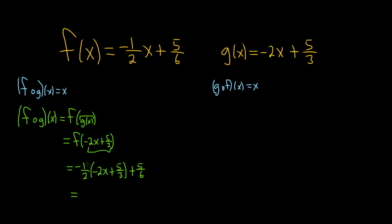Let's distribute this negative 1 half. Negative 1 half times negative 2x - the 2's will cancel, and the negatives will become a positive and we just get x. Negative 1 half times 5 thirds, you just get negative 5 sixths. And then we have our plus 5 sixths, and then these cancel, and you get x. So we're halfway done. Good stuff.